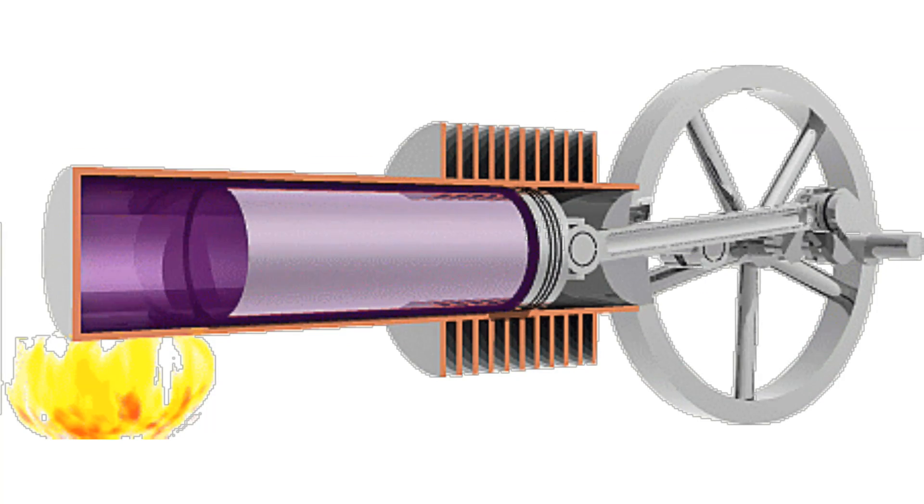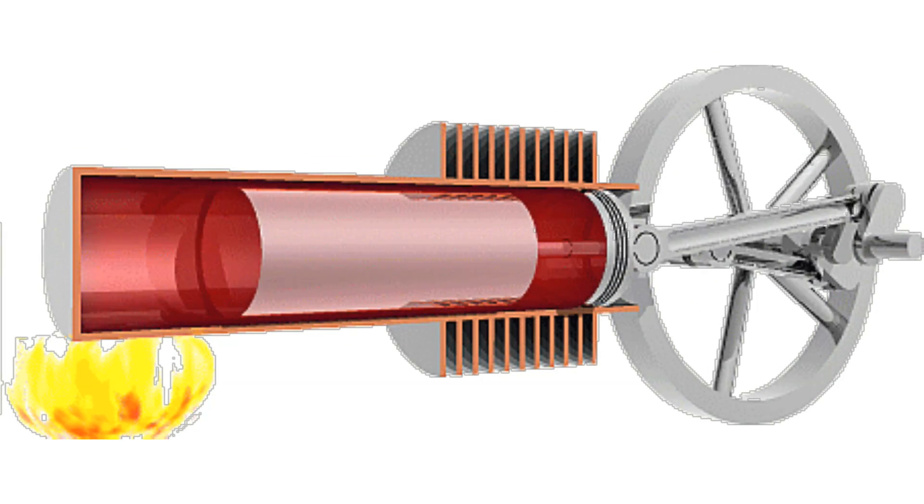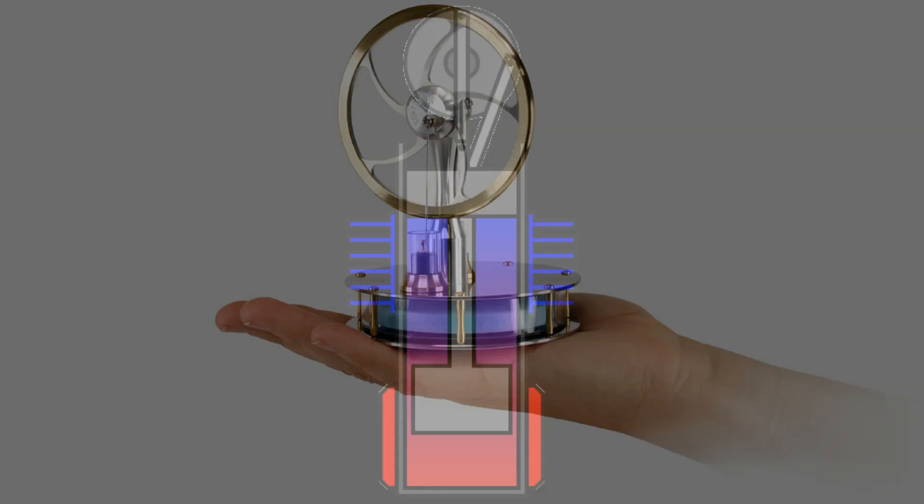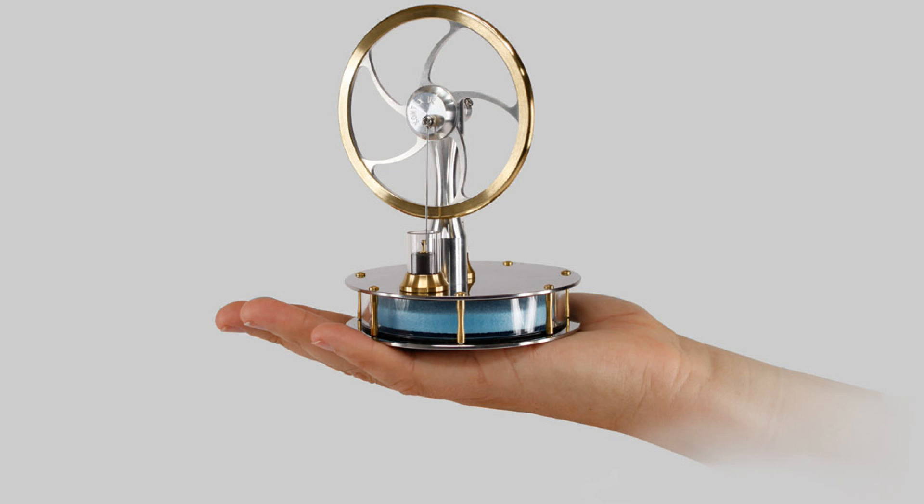Stirling engine operation is based on the volume change of the working fluid. An important feature is that it works from the temperature difference. Low-temperature engines are able to work from human body heat.